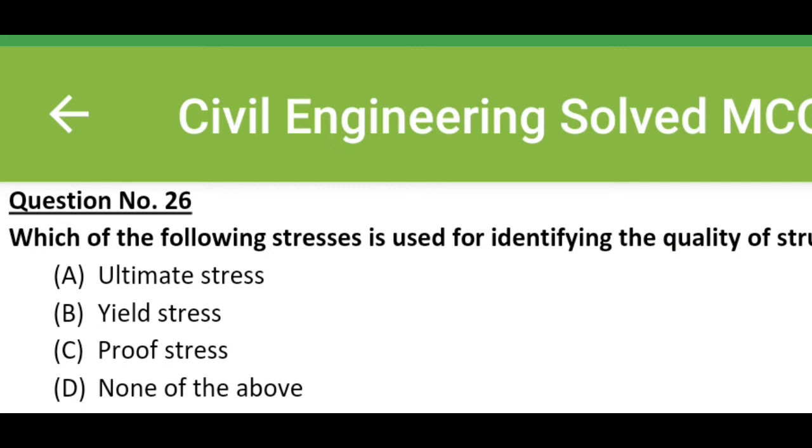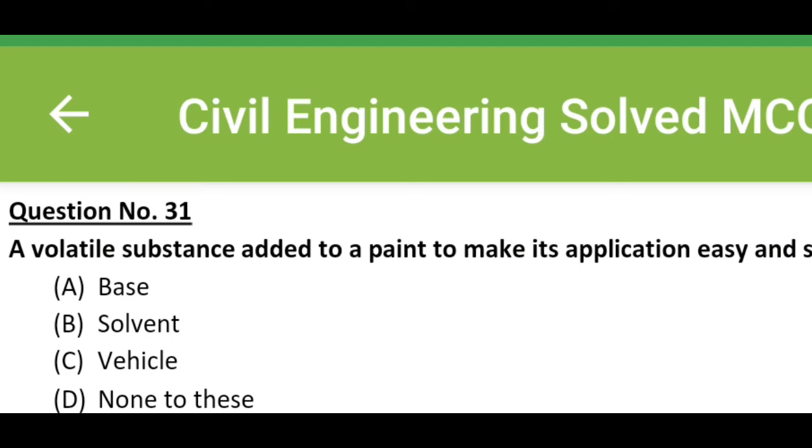Option C, proof stress. Option D, none of the above. The correct answer is option B, yield stress. A volatile substance added to paint to make its application easy and smooth is known as: Option A, base. Option B, solvent.